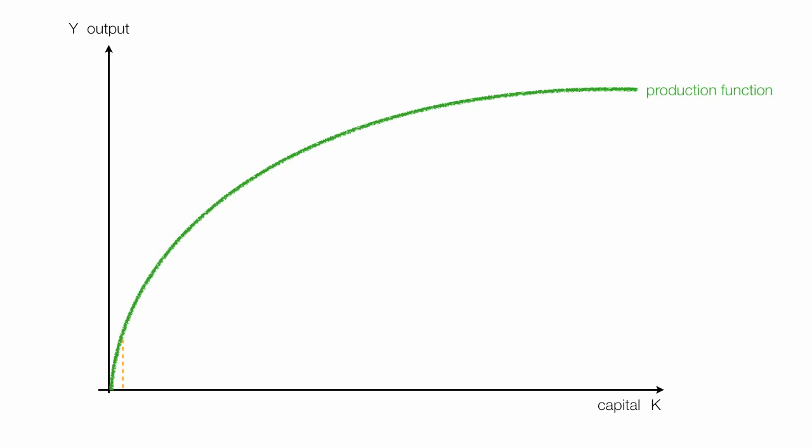For every level of capital, there's a corresponding level of output. When the amount of capital is increased, the amount of output also increases. And this is true along the entire green curve, along the entire production function. Again, capital increases, output increases.